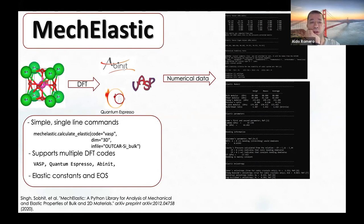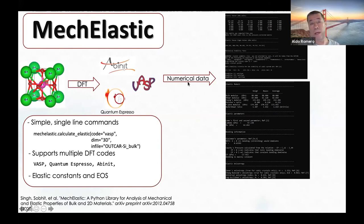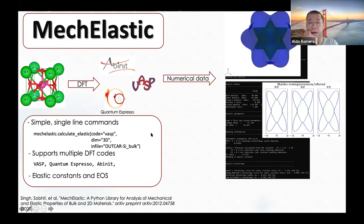We parse the output from these different codes and perform elastic analysis. We can do this for three-dimensional crystals and also for two-dimensional crystals. We can also do an equation of state analysis, and additionally a three-dimensional visualization of the elastic constants, which is especially useful for experimentalists—for example, visualizing the compression ratio in two-dimensional plots or in three dimensions.